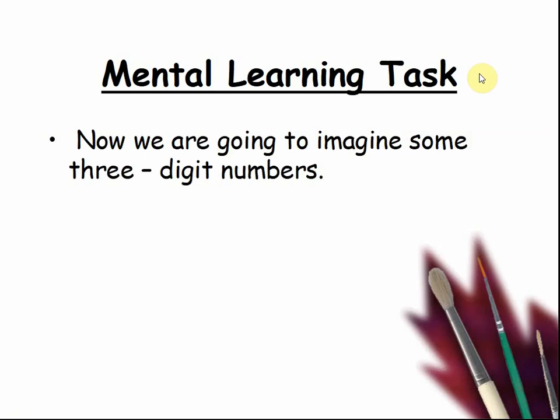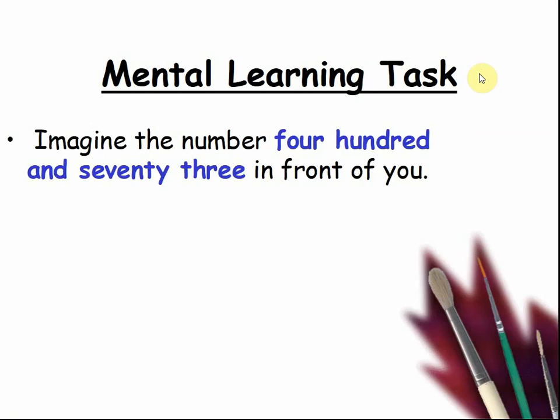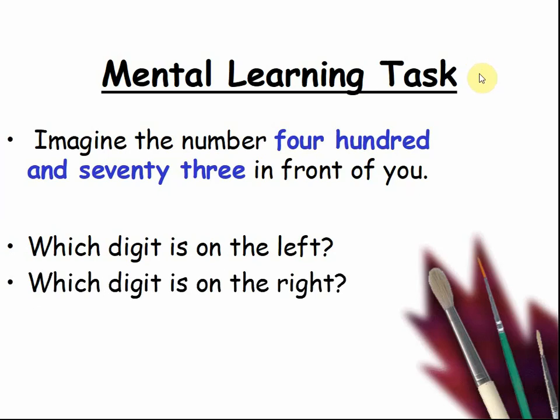Now we're going to imagine some 3 digit numbers. Imagine the number 473 in front of you. Which digit is on the left? That's right, it would be the number 4. Which digit is on the right? That's right, it would be the number 3. Which digit is in the middle? That's right, it would be the 7. So there would be a 4 on the left, a 3 on the right and a 7 in the middle.